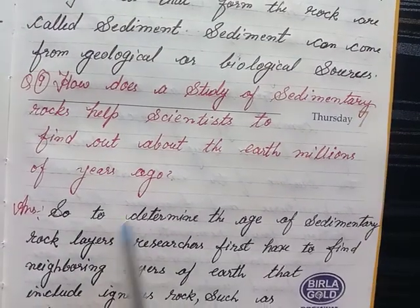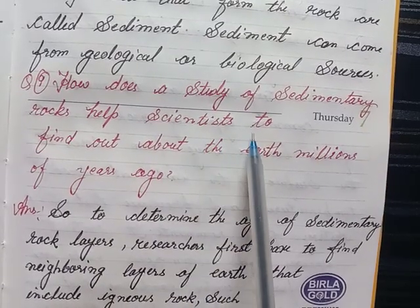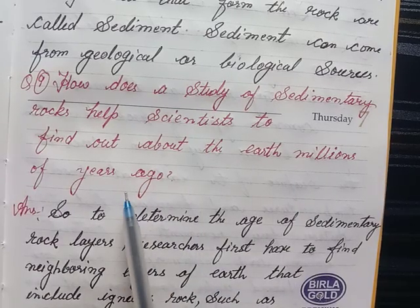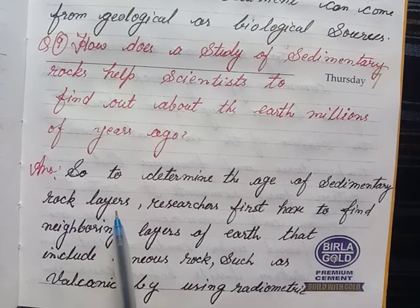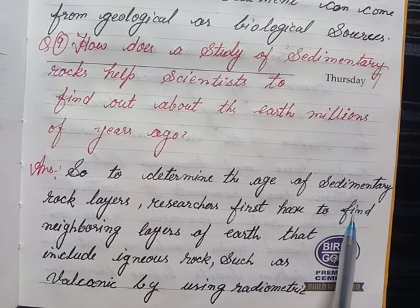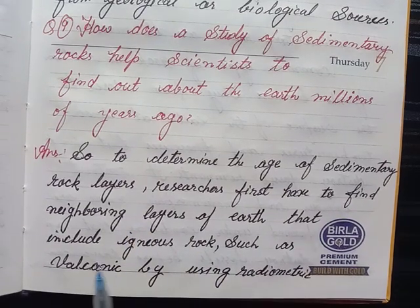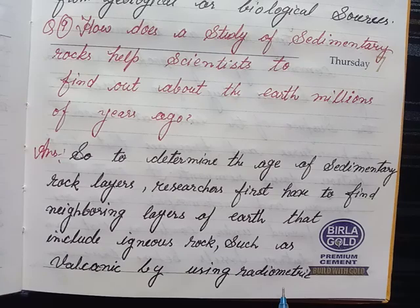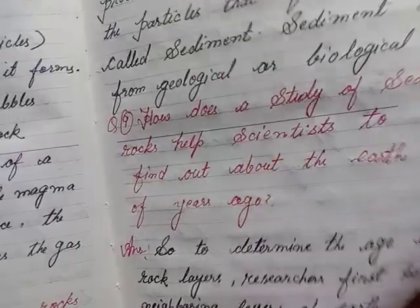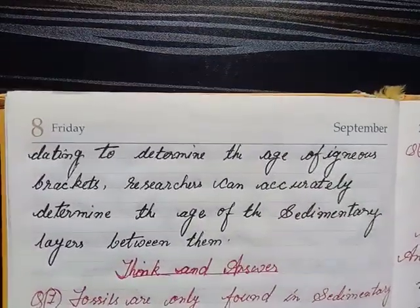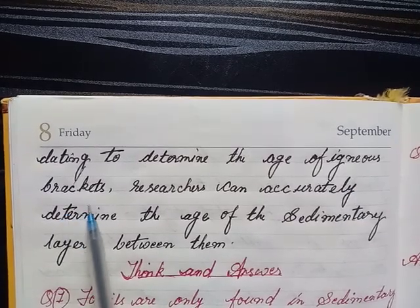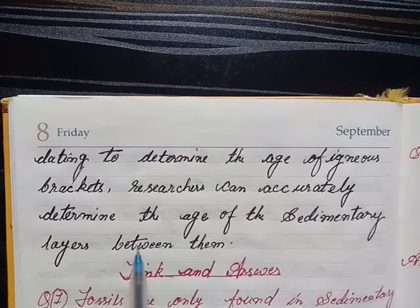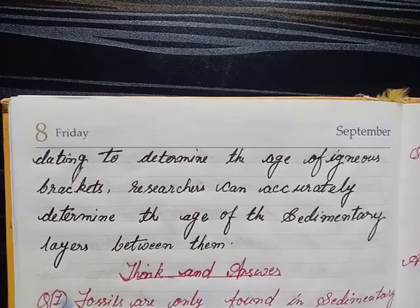Question nine: how does a study of sedimentary rocks help scientists find out about the earth millions of years ago? Answer: to determine the age of sedimentary rock layers, researchers first have to find neighboring layers that include igneous rocks such as volcanic rock. By using radiometric dating to determine the age of the igneous brackets, researchers can accurately determine the age of sedimentary layers between them.